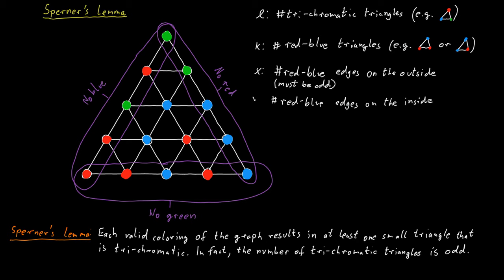Finally, let y be the number of red-blue edges on the inside of the large triangle. So the total number of red-blue edges is just x plus y.